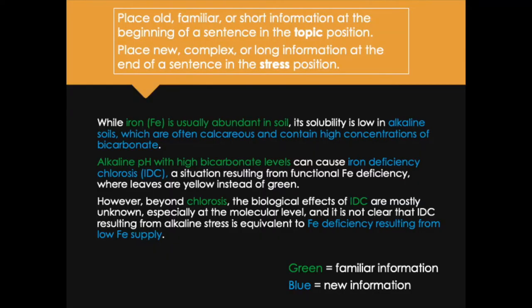Here's an example using three sentences. The first: 'While iron is usually abundant in soil, its solubility is low in alkaline soils, which are often calcareous and contain high concentrations of bicarbonate.' The familiar information — iron and soil — appears at the start (shown in green), while the new information — alkaline soils and their characteristics — appears at the end in the stress position (shown in blue). Now that alkaline soils have been introduced, the second sentence starts with that concept as its subject.